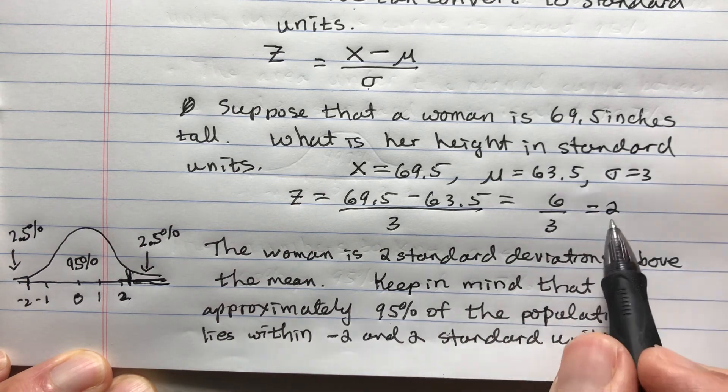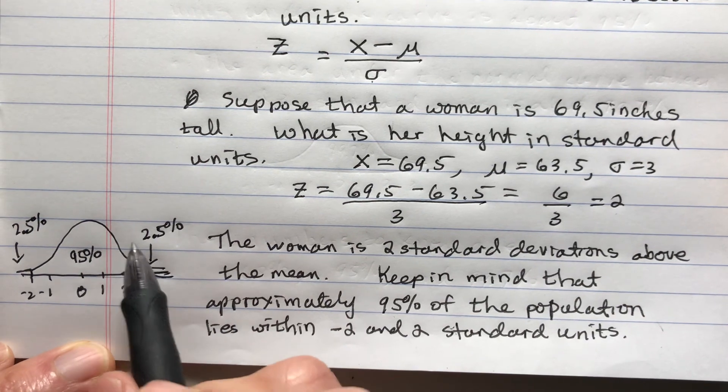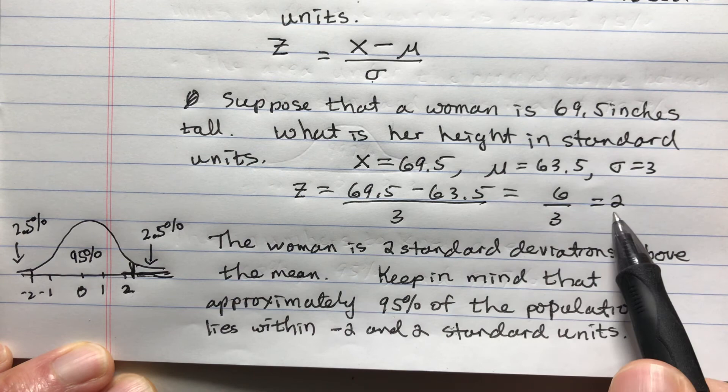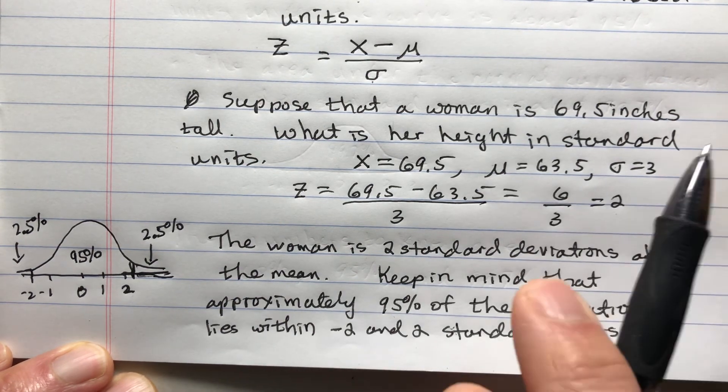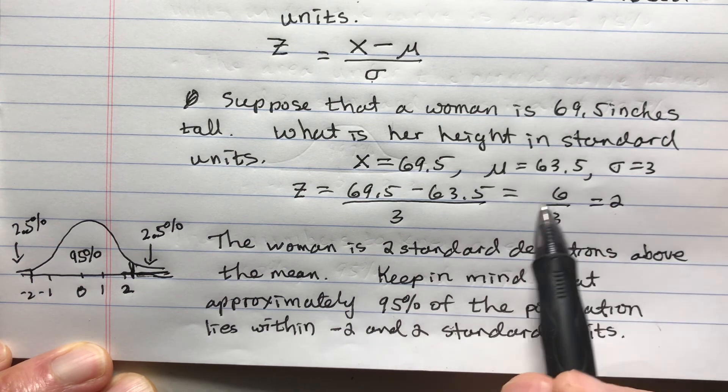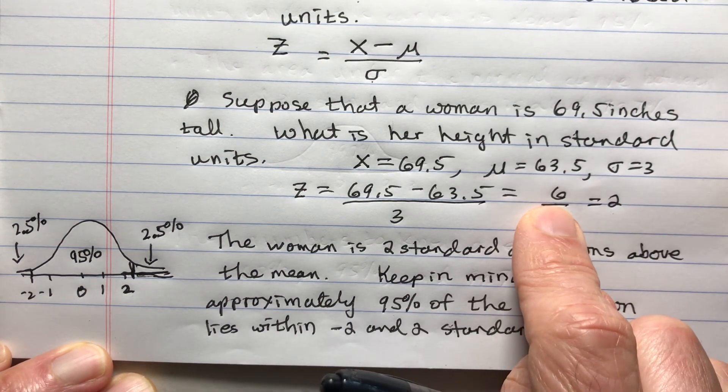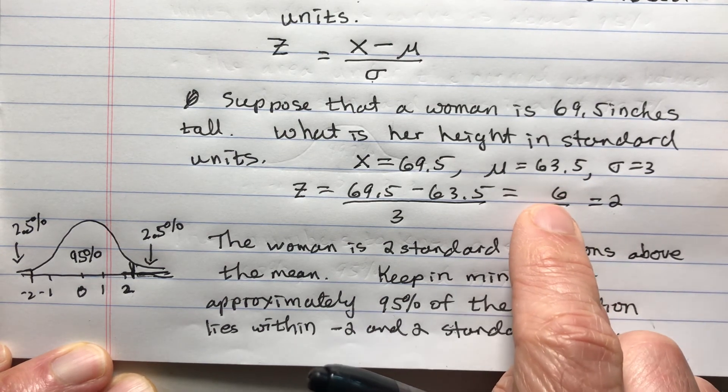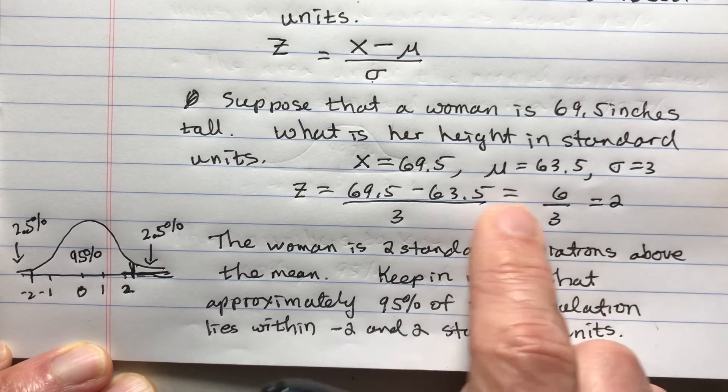Putting this in standard units and talking about percentages of the population helps us understand whether this is a big number. It's 6 above the average. Is that a lot or a little? If I were talking about 6 millimeters, that would be not very much. What units are we using?